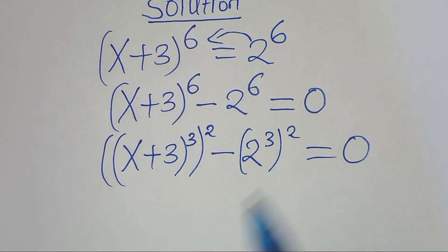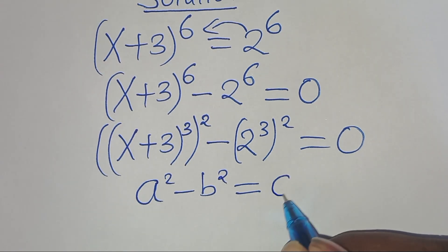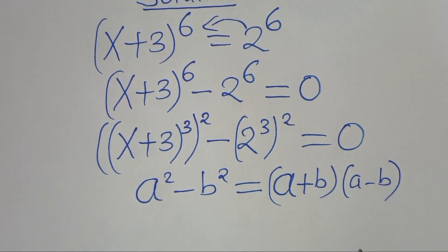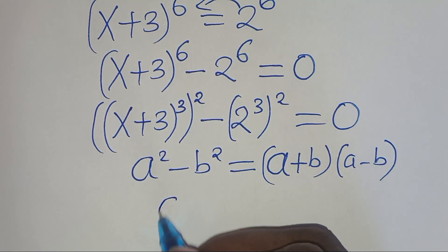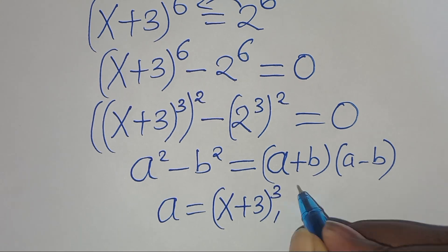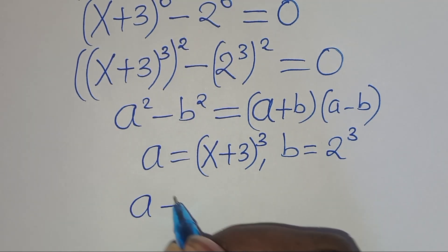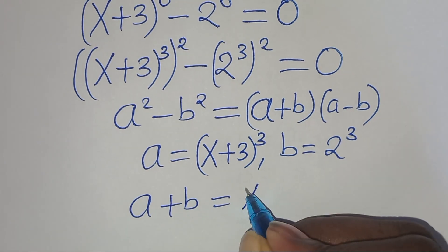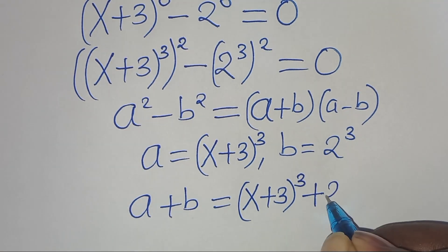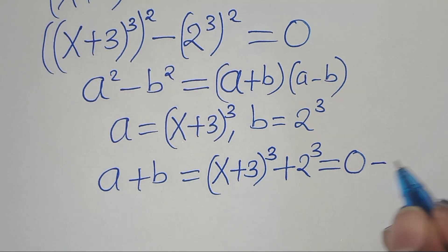Now this equation is in the form of a squared minus b squared, which is the difference of two perfect squares, and this can be expressed as a plus b, times a minus b. From this equation, we have that a is equal to x plus 3 raised to the power of 3, and b is equal to 2 to the power of 3. Therefore a plus b gives us x plus 3 raised to the power of 3, plus 2 to the power of 3, equal to 0. Let's call this equation 1.